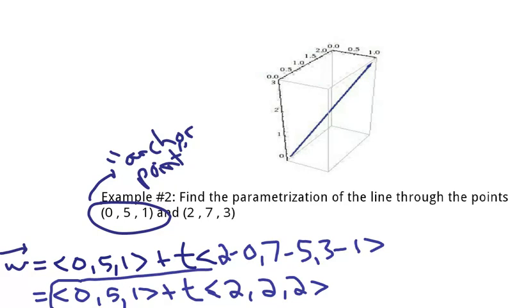So this would be the parametrization of this line in three-dimensional space. And I've used vectors to do it. And again, t is known as my parameter. So again, we could check it. Let's say, let's let t equal 0. All of this goes away, and I get (0, 5, 1), using vector addition.